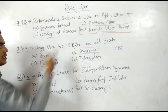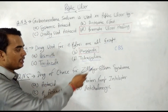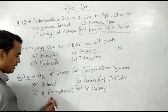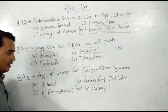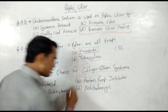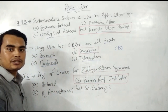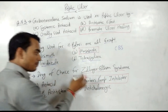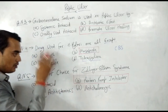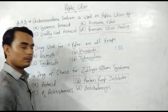The next question: drug of choice for Zollinger-Ellison syndrome. Options are antacid, proton pump inhibitor, H2 antihistaminics, and anticholinergic. The drug of choice for Zollinger-Ellison syndrome is the proton pump inhibitor. PPI is also used for peptic ulcer and esophageal ulcer. The correct answer is proton pump inhibitor. Thank you.